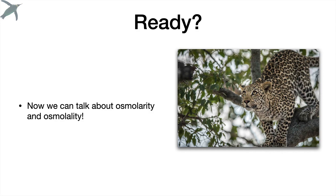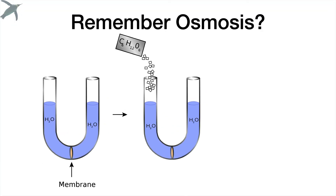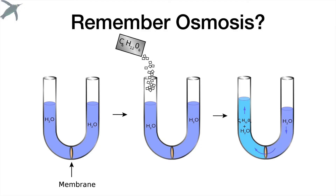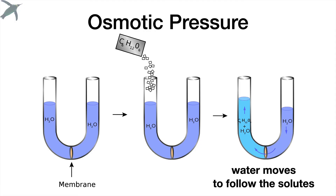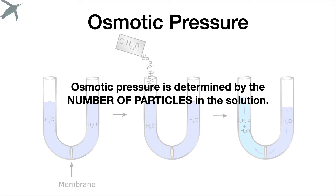Now that we have molarity and molality, we can finally talk about osmolarity and osmolality. You've got to remember osmosis for this. We can have a U-shaped tube with water and a semi-permeable membrane. We can add solutes on one side — these are non-penetrating solutes, so the solutes can't cross, only water can cross. And water will move to follow the solutes, even against gravity. That's osmosis.